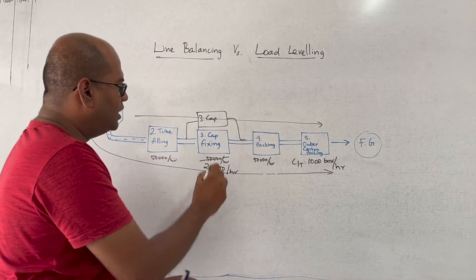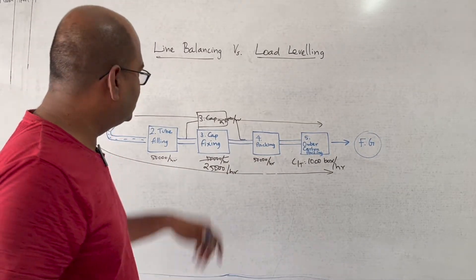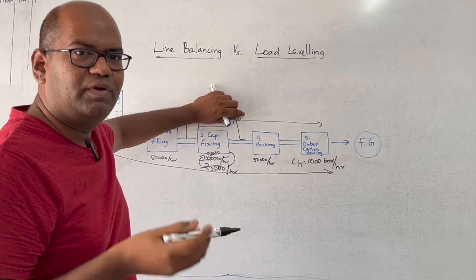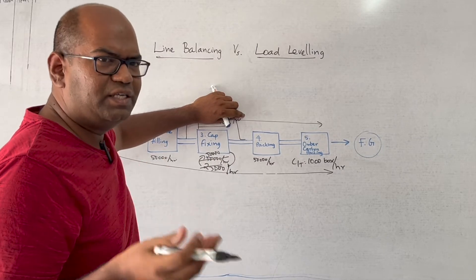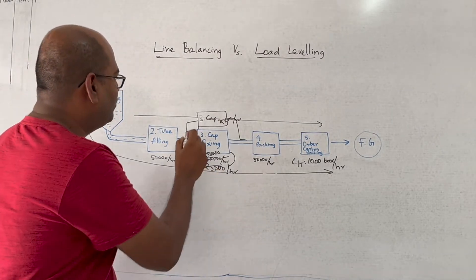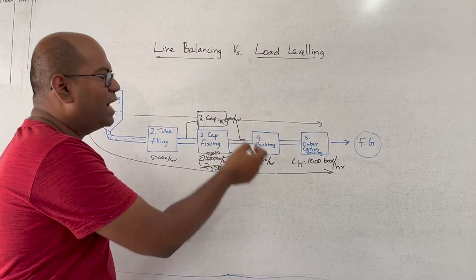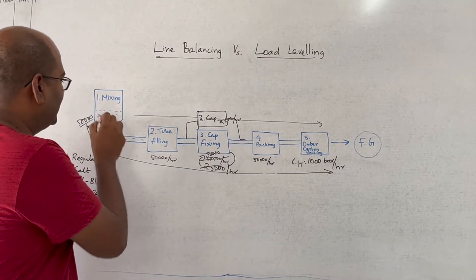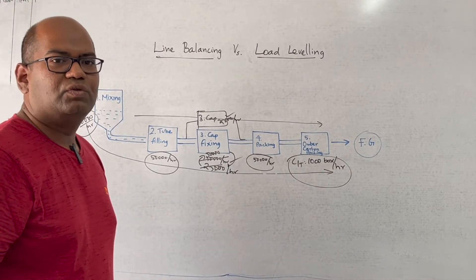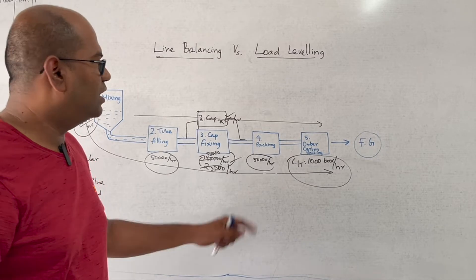Adding another machine brings the total back to 50,000, so the line is balanced. What we ideally look at in lean is: instead of adding a machine, can I increase the capacity of the bottleneck from 25,000 back to 50,000? If we can do that, it's called kaizen — improving the bottleneck machine. But generally, what companies do is add one more machine, which is a capital expense. This is called line balancing — making sure the cycle times of all activities are equal.